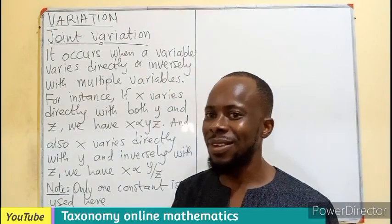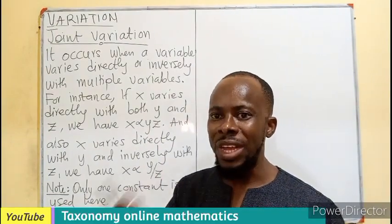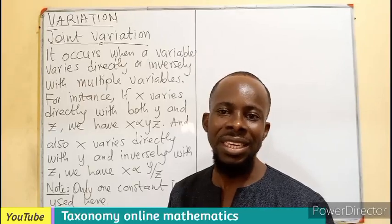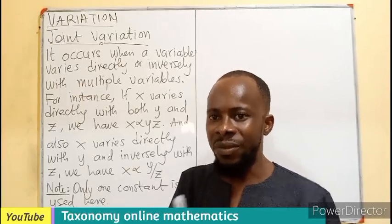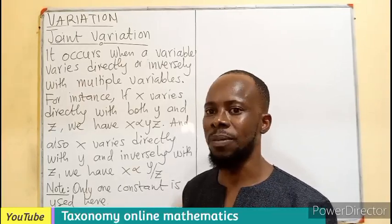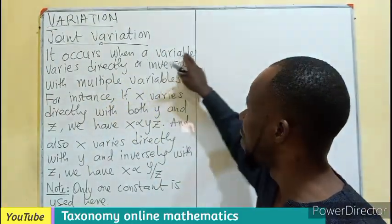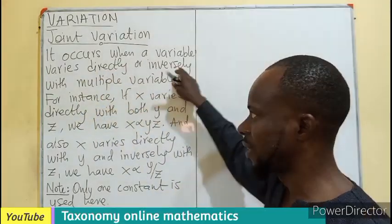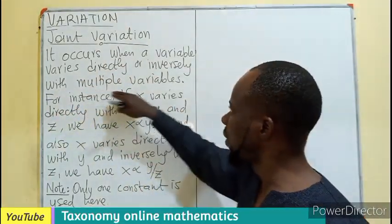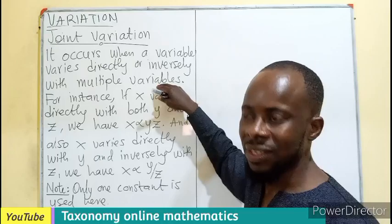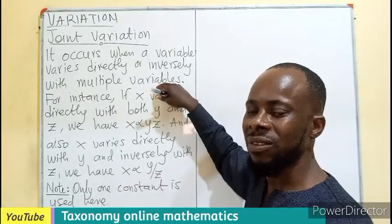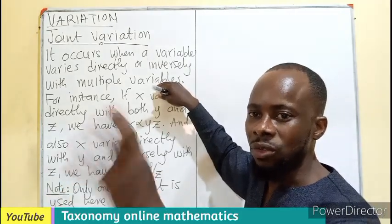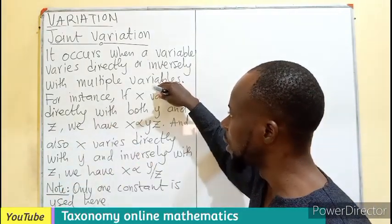As the word said, joint, meaning we are joining the previous episodes, direct variation and inverse variation together in one question. It occurs when a variable varies directly or inversely with multiple variables. Multiple variables will be used.